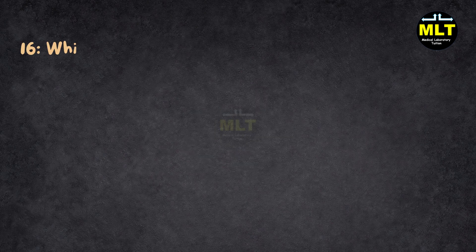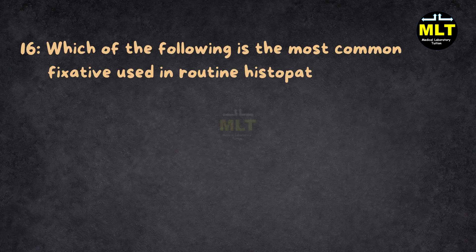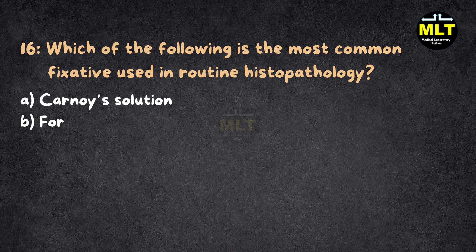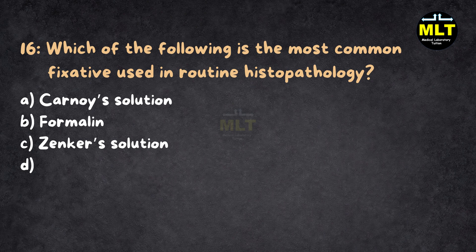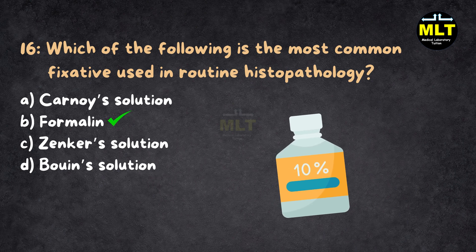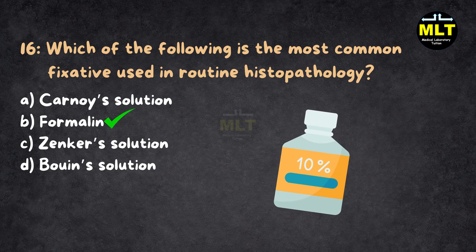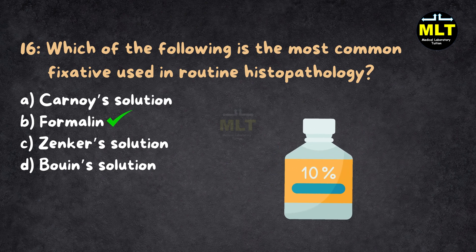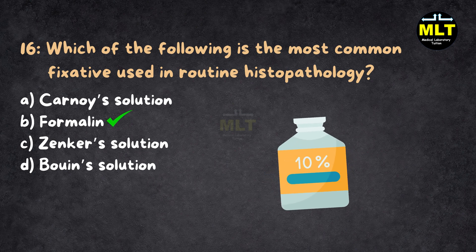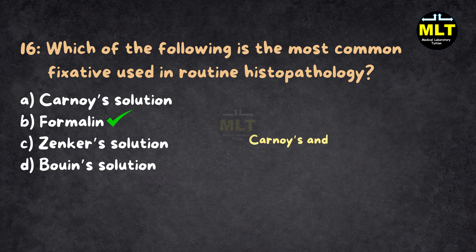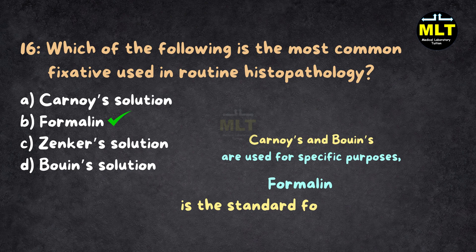Question 16: Which of the following is the most common fixative used in routine histopathology? Options: A. Carnoy's solution, B. Formalin, C. Zenker's solution, D. Bouin's solution. Correct answer: B. Formalin. Explanation: Formalin is the most widely used fixative in routine histopathology. It preserves tissue structure by cross-linking proteins and is effective in preventing tissue decay. Other fixatives like Carnoy's and Bouin's are used for specific purposes, but formalin is the standard for most samples.